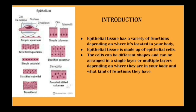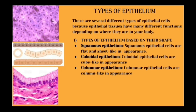The type of epithelium is determined by the function it is performing. Based on shape, there is squamous epithelium — cells that are flat and sheet-like in appearance; cuboidal — cube-like in appearance; and columnar epithelium — shaped like columns.